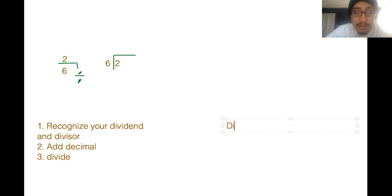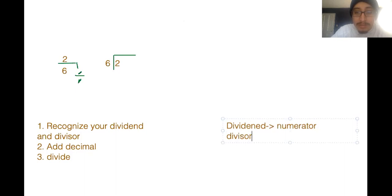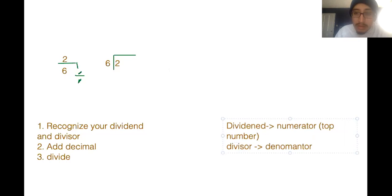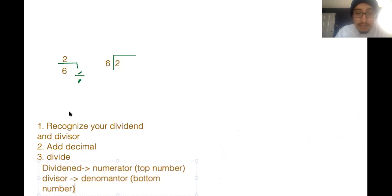Let me write that down just in case you forgot. Your dividend is always going to be your numerator — that's the top part of your fraction. Your divisor, the number you're using to divide, is always going to be your denominator. In other words, just in case you keep getting confused: dividend is always going to be your top number, divisor is always going to be your bottom number.